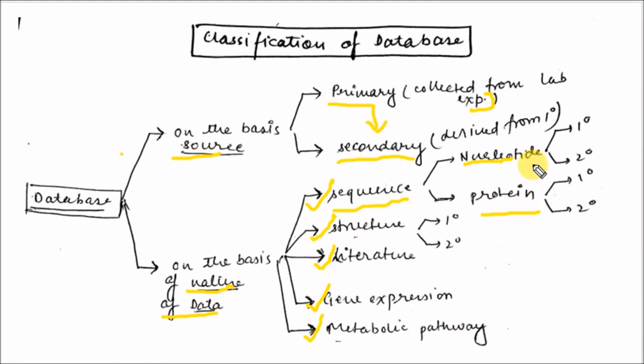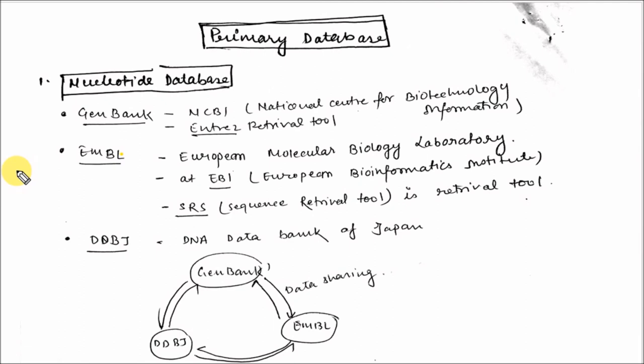Nucleotide sequence databases can be primary sequence databases or secondary nucleotide sequence databases, similarly for the protein and structure databases.